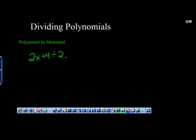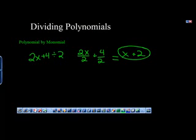You want to divide each term in the polynomial by the monomial, so we end up with 2x divided by 2 plus 4 divided by 2. When we simplify that, we see that 2x divided by 2 becomes x, and 4 divided by 2 becomes 2.